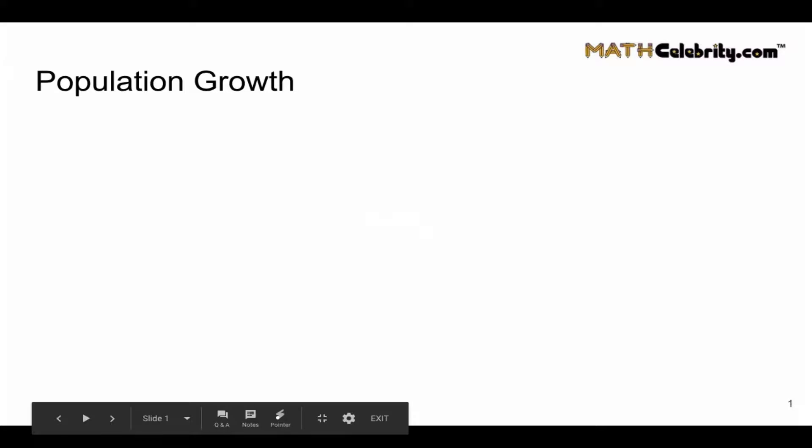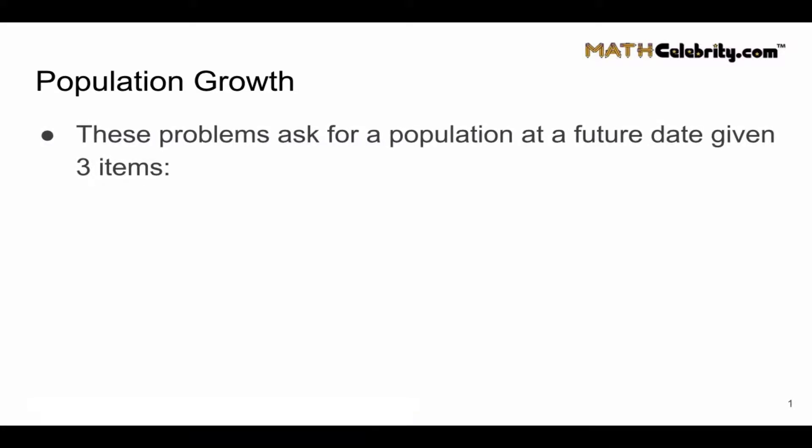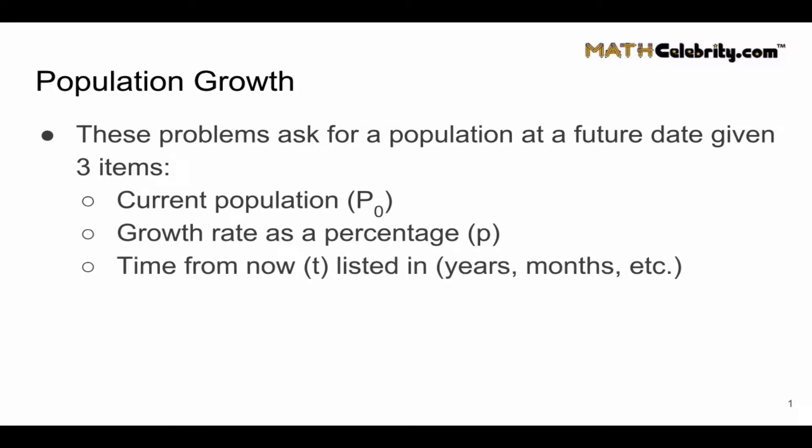So let's talk about population growth. You'll know that this is a problem for population growth when they ask for a population at a future date given three items: Current population, we call this P sub zero or P naught, growth rate as a percentage, and finally a time from now listed in years, months, days, etc.